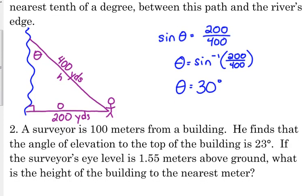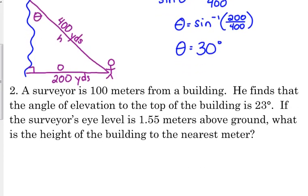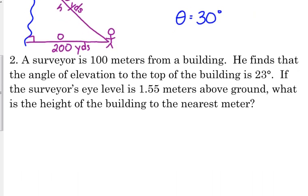So look at the next one. A surveyor is 100 meters from a building. He finds that the angle of elevation to the top of the building is 23 degrees. If the surveyor's eye level is 1.55 meters above ground, what is the height of the building to the nearest meter?